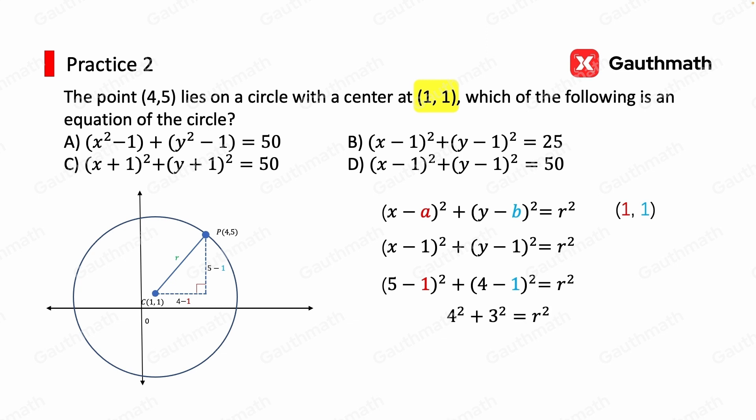And so the radius is 5. And we can keep R squared as it is. And let's put it back into our equation of the circle. So the equation is now x minus 1 squared plus y minus 1 squared equals 25. And the correct answer is B.